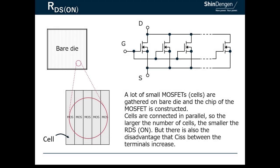The MOSFET cell is generally striped when viewed from a planar perspective. You can see that the smaller the cells, the more cells can be implemented. Since the cells are connected in parallel, the more cells there are, the smaller the RDS(ON) becomes.